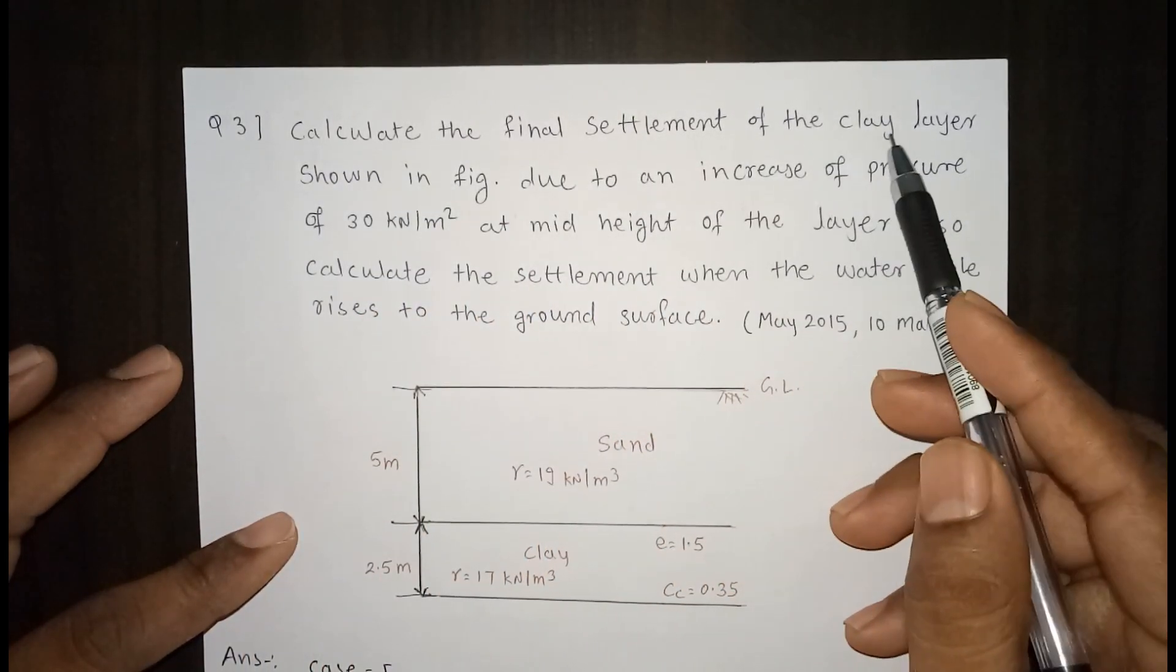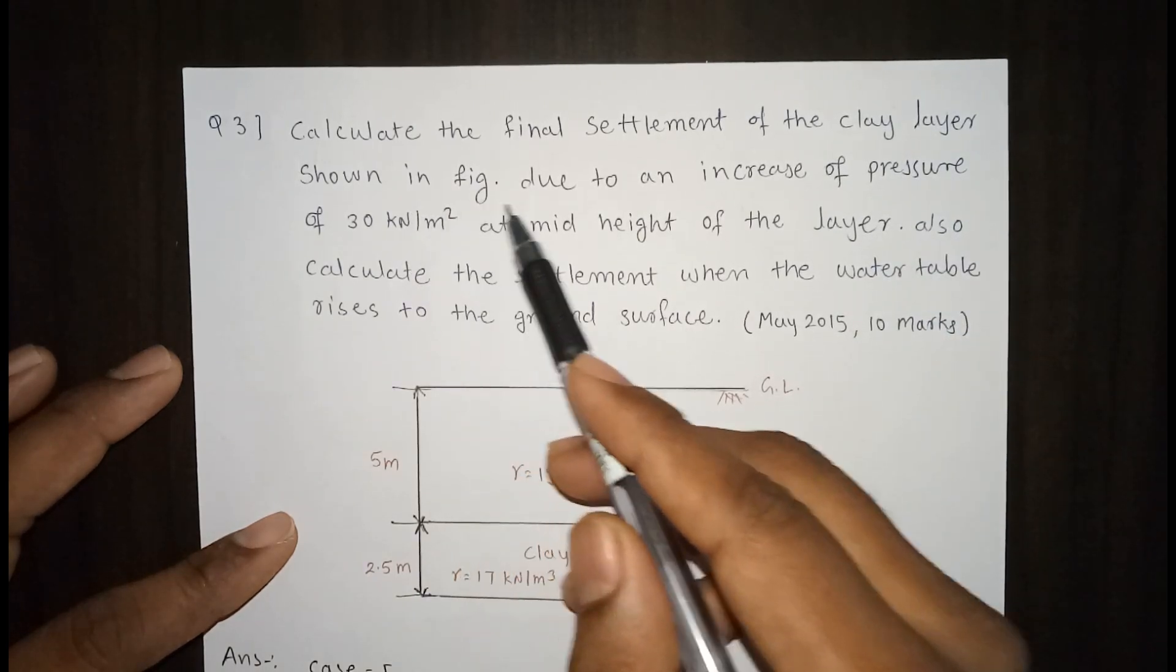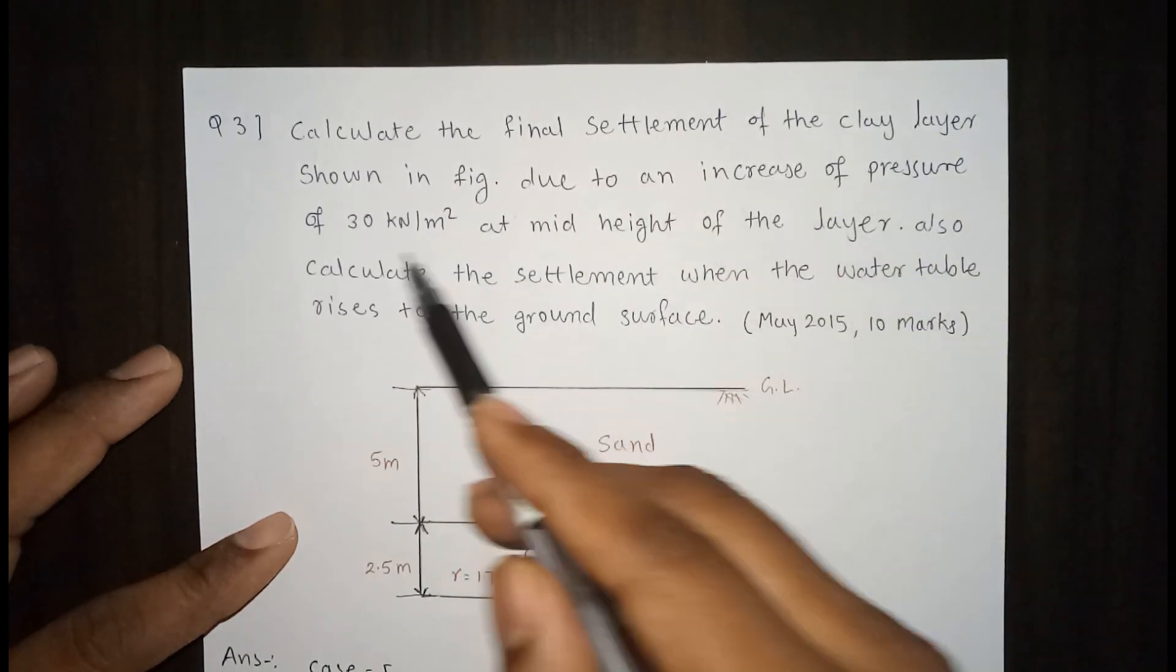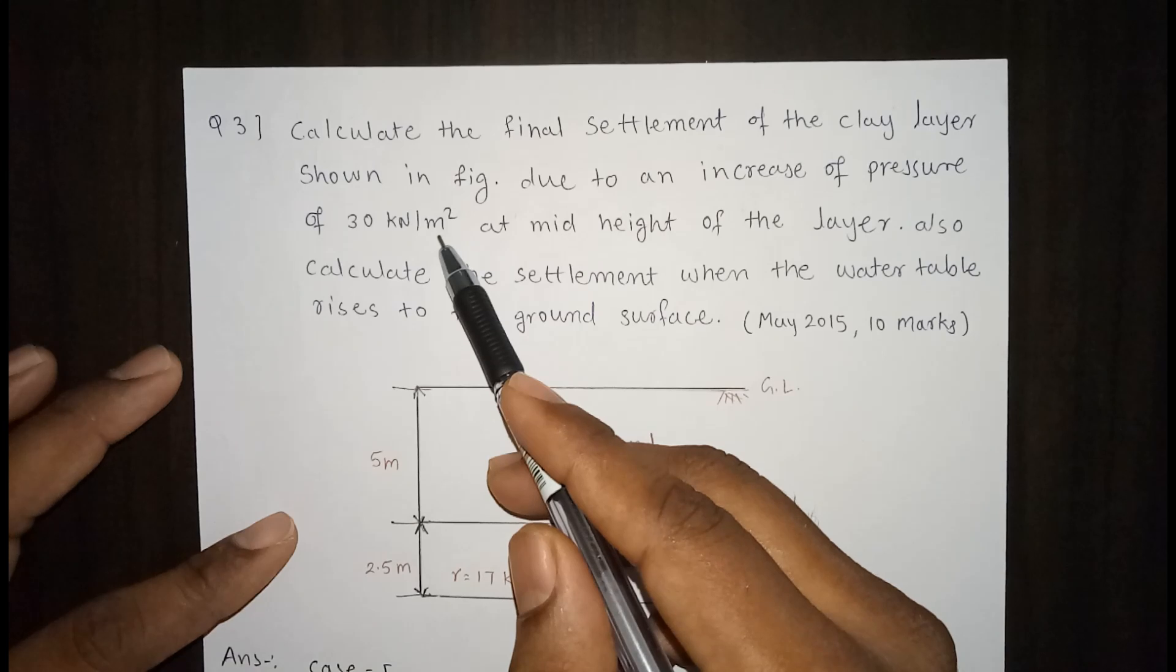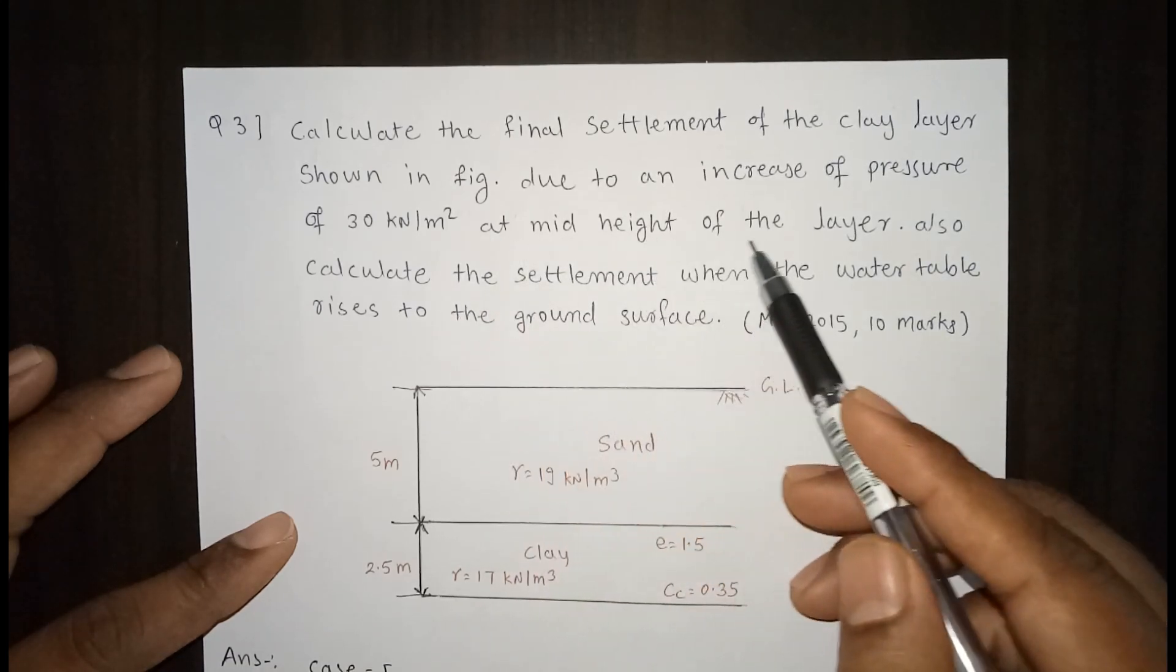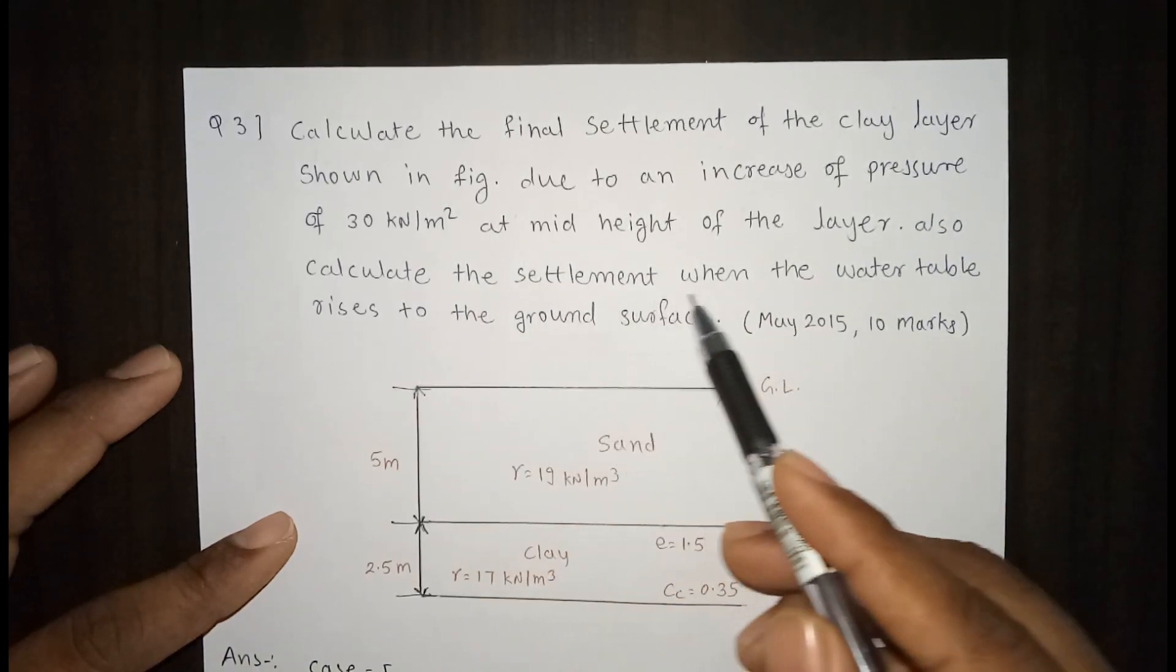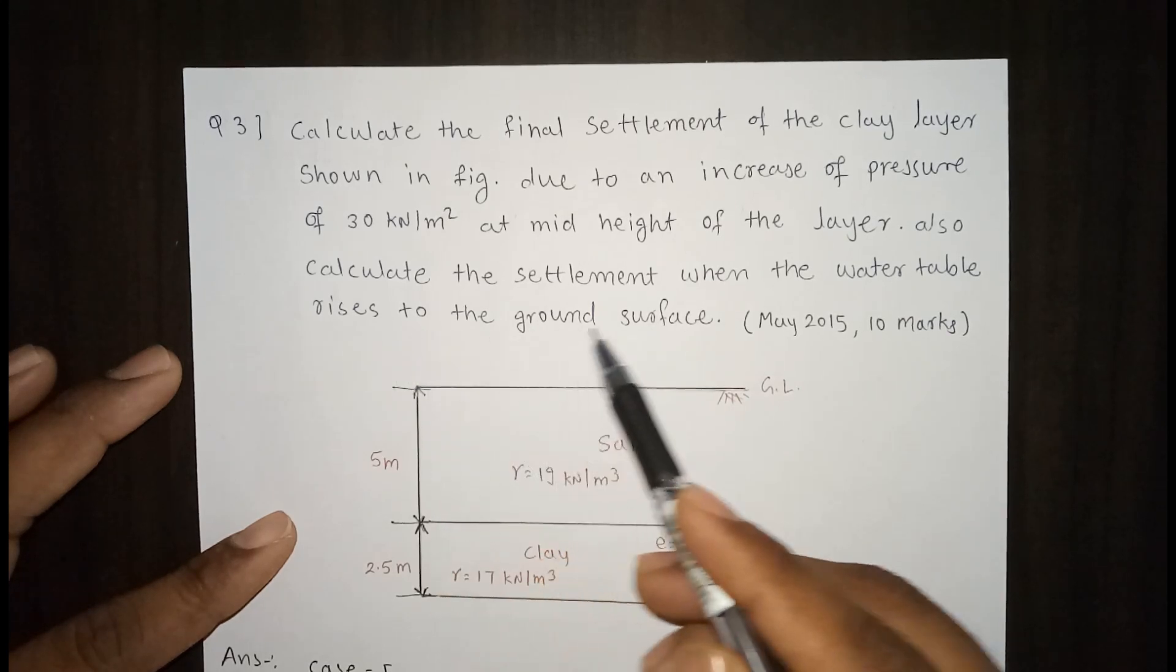Calculate the final settlement of the clay layer shown in figure due to an increase of pressure of 30 kN per meter square at mid height of the layer. Also calculate the settlement when the water table rises to the ground surface.